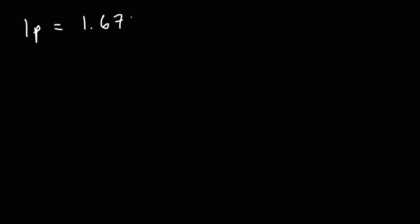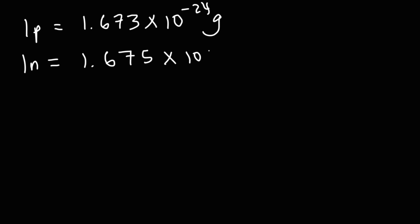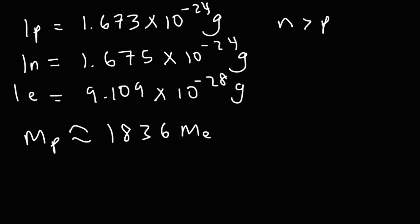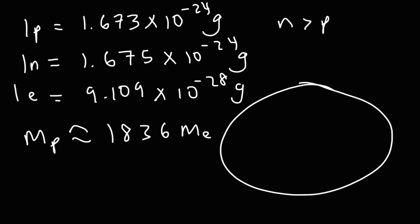Now let's talk about the mass of a proton and a neutron. One proton has a mass of 1.673 × 10⁻²⁴ grams. The mass of a neutron is very close to that — about 1.675 × 10⁻²⁴ grams — so a neutron is slightly heavier than a proton. An electron has a very small mass: 9.109 × 10⁻²⁸ grams. The mass of one proton is approximately 1836 times greater than the mass of an electron. So electrons are relatively tiny compared to protons and neutrons, which means the majority of the mass of an atom is in the nucleus. The nucleus is very, very tiny, and the atom is mostly empty space surrounded by tiny electrons.